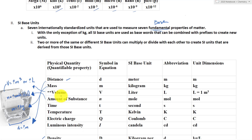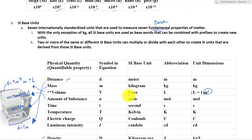Notice that volume is added here. Volume in liters used to be considered one of the SI base units, but volume is actually directly related to meter cubed — one liter is equal to one meter cubed. Because volume in liters is so commonly used in chemistry and science, we include it here, since liter is more commonly used than meter cubed.